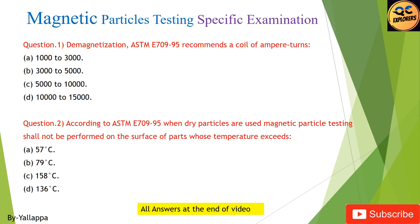Question 1 — Demagnetization: ASTM E709-95 recommends a coil of ampere turns of: (A) 1,000 to 30,000; (B) 30,000 to 50,000; (C) 5,000 to 10,000; (D) 10,000 to 15,000.